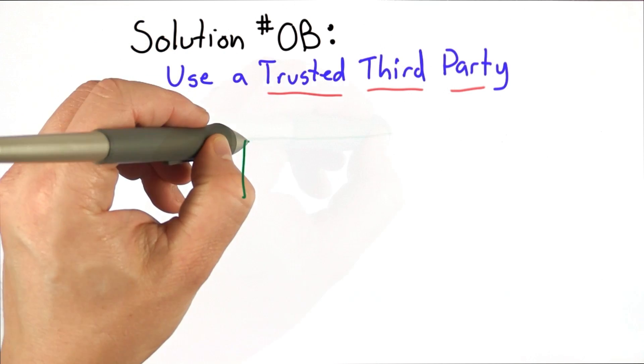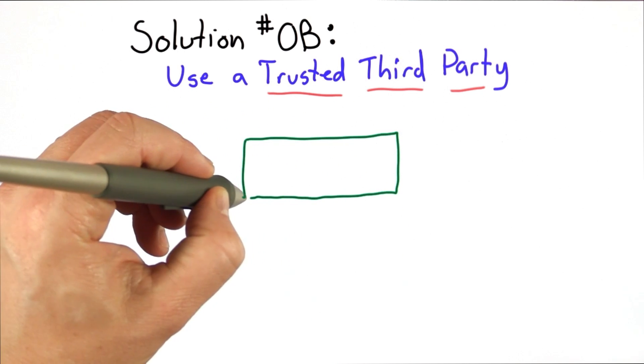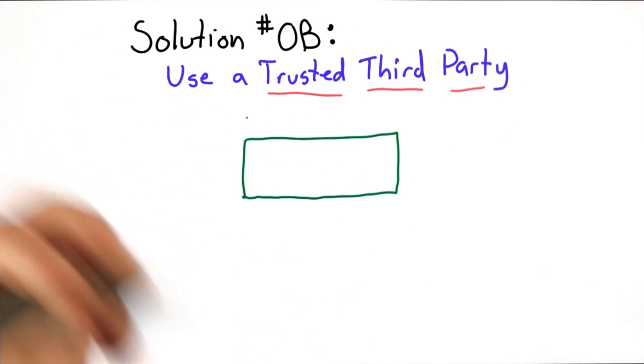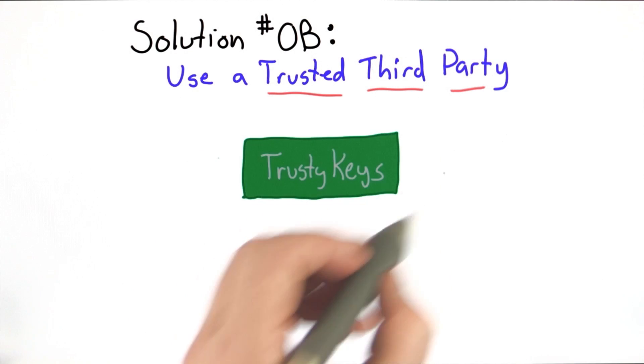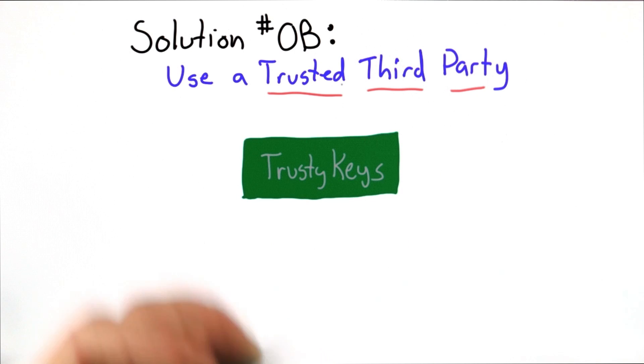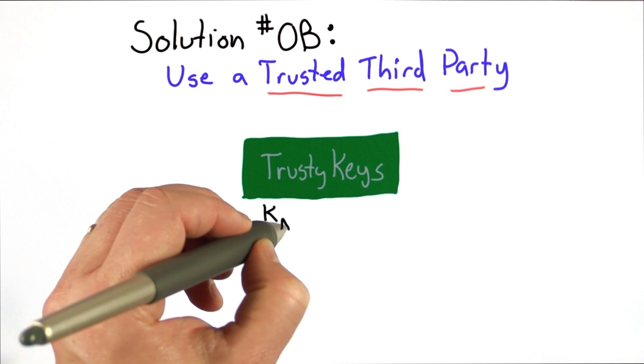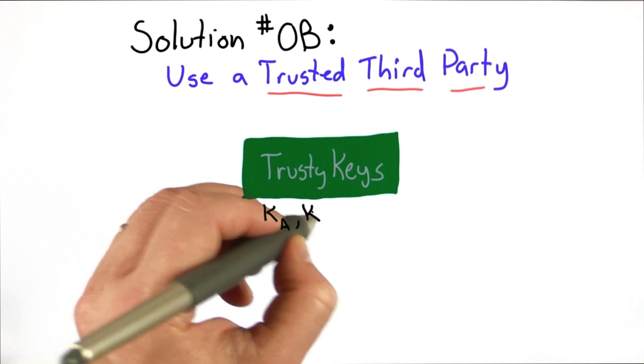Here's the idea that we have some very trustworthy place, and we'll make it green, people trust things that are green. We have this very trusty place called TrustyKeys, and TrustyKeys has a shared secret with each individual in the network.